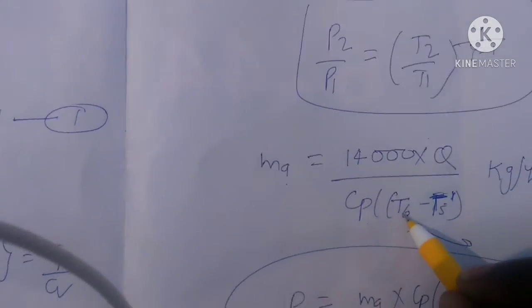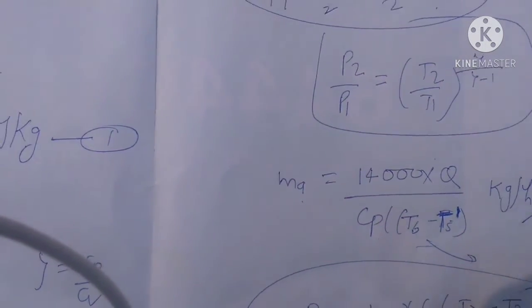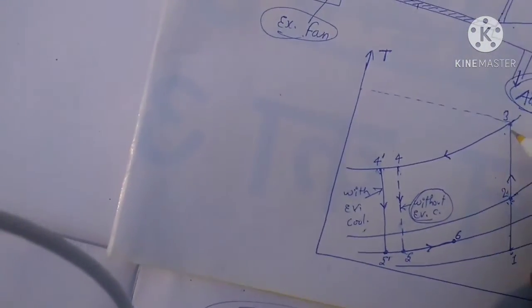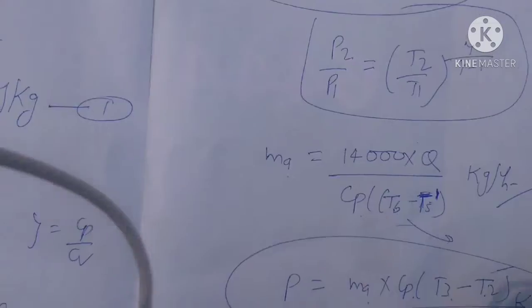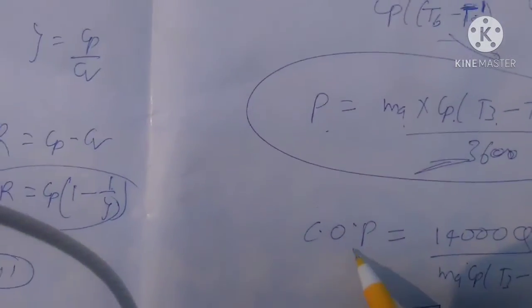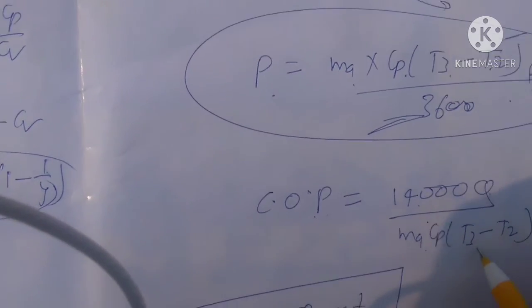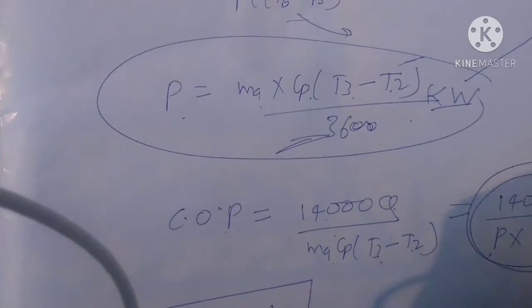You see here T6 minus T5 dash with evaporator cooling. P equals ms times Cp times (T3 minus T2), always the same. This is another formula for R2 zero kW, and COP equals 14000 Q divided by Cp times T3 minus temperature.